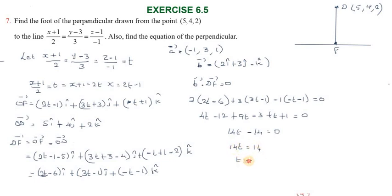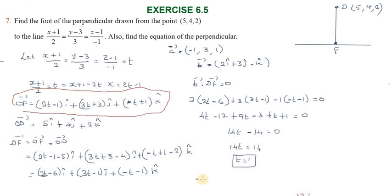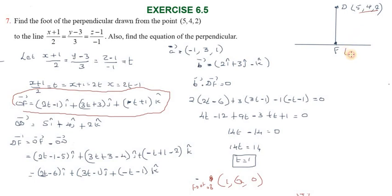Adding the t terms: 4t + 9t + t = 14t. Adding constants: −12 − 3 + 1 = −14. So 14t − 14 = 0, giving t = 1. Substituting t = 1: x = 2(1) − 1 = 1, y = 3(1) + 3 = 6, z = −(1) + 1 = 0. Therefore, the foot of the perpendicular is (1, 6, 0).